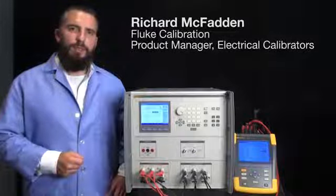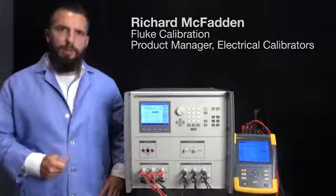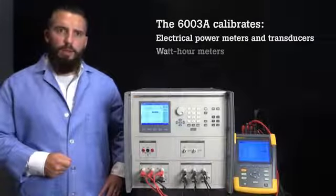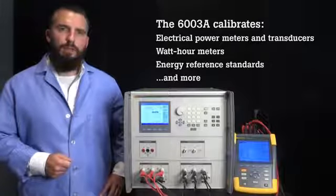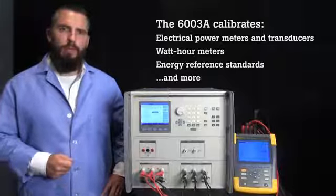The Fluke Calibration 6003A Three-Phase Power Calibrator is a precise instrument for calibrating electrical power meters and transducers, watt-hour meters, energy reference standards, and other measuring devices used to determine the magnitude and power quality of electricity supplied to consumers.